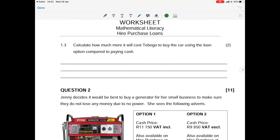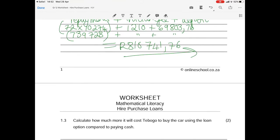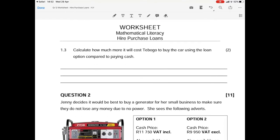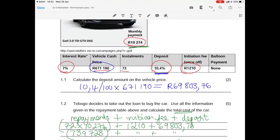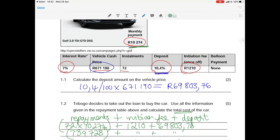Question 1.3 asks how much more will it cost Tabogu to buy the car using this loan option compared to paying cash. We've just worked out that the loan option is going to cost us R810,741. That is what we're going to subtract from. The cash price is R671,190.